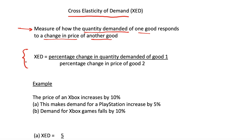We've written this definition out as an equation, and this is how we calculate XED. It will be the percentage change in quantity demanded of good one divided by the percentage change in price of good two. So our quantity demanded is on the top and price is on the bottom — the percentage change in our first good divided by the percentage change in price of our second good. This is our XED equation.